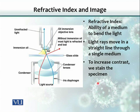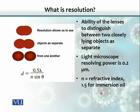In order to increase contrast, we stain the specimen. Staining is basically to increase contrast so that our eyes can more easily see the organism or object.